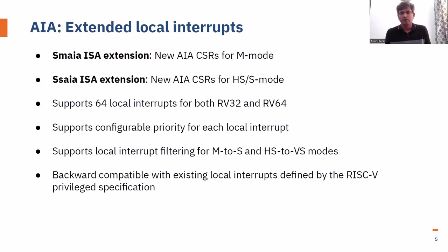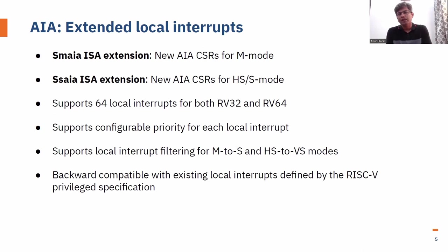The external local interrupts feature is defined as two ISA extensions: Smaia and Ssaia. Smaia deals with new AIA CSRs for M-mode, and Ssaia deals with new CSRs for HS or S-mode, and VS-mode as well. With AIA external local interrupts, we have 64 local interrupts for both RV32 and RV64. Each of these local interrupts now has a configurable priority, which was not there before. We also have local interrupt filtering, where a higher privileged mode can take an interrupt and selectively inject it to a lower privileged mode. This is available for both M-mode to S-mode filtering and HS-mode to VS-mode filtering. The CSRs added by these extended local interrupts are totally backward compatible with the existing local interrupt mechanism defined by the RISC-V privilege specification.